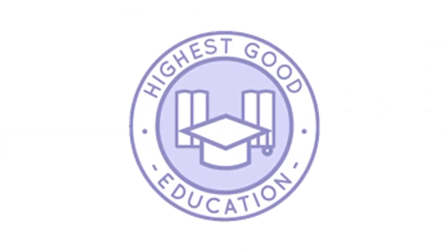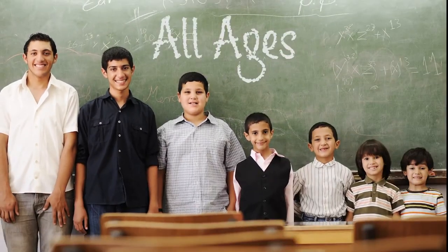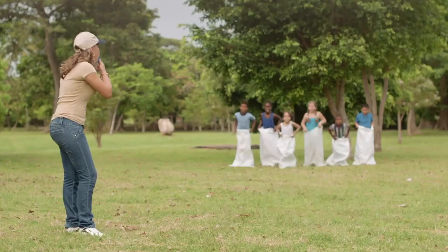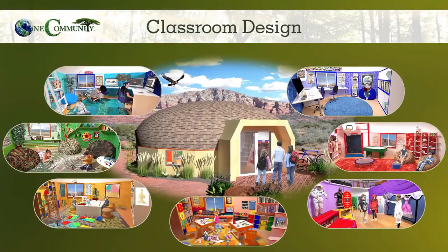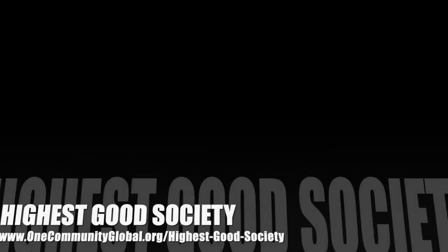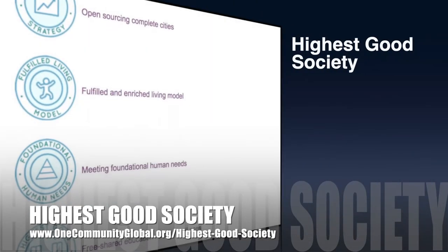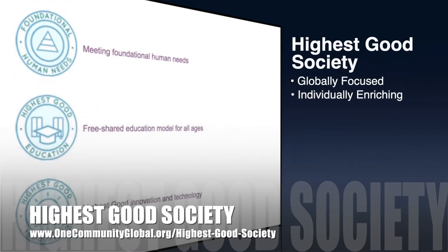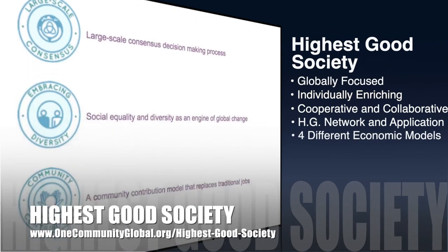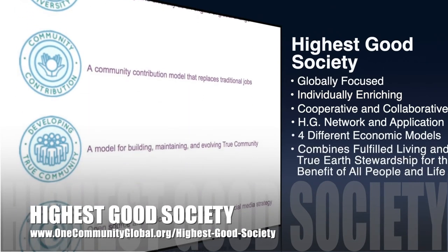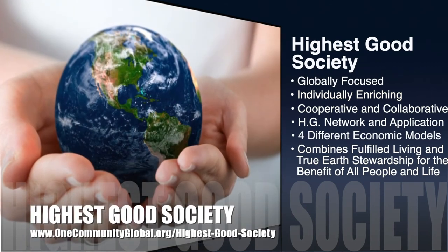The next component is highest good education. This component is complete and pretty much ready to launch once we're on the property. One Community's approach to highest good education is designed for all age groups, adaptable to any schooling environment, inspiring and fun for all participants, and includes national standards, all subjects, lesson plans, teaching strategies, learning strategies and tools, classroom design, and more. The One Community approach to highest good society is globally focused, individually enriching, cooperative and collaborative, includes a highest good network and application, four different economic models, and combines fulfilled living and true earth stewardship for the benefit of all people and all life on this planet.